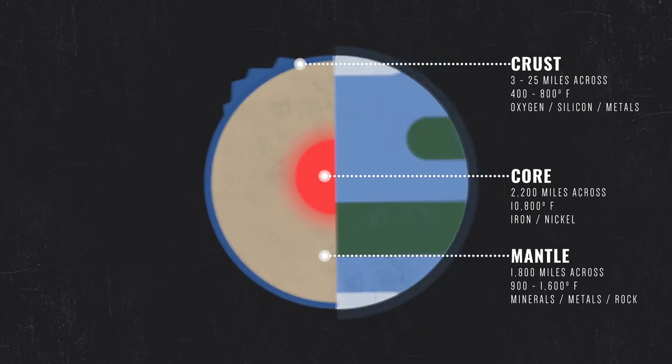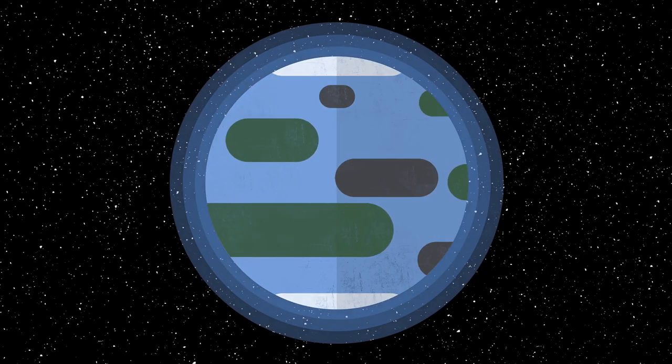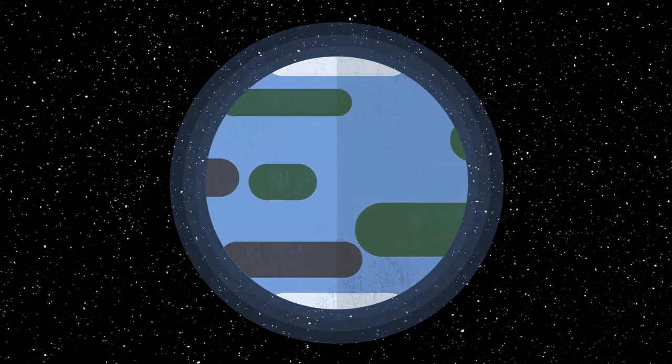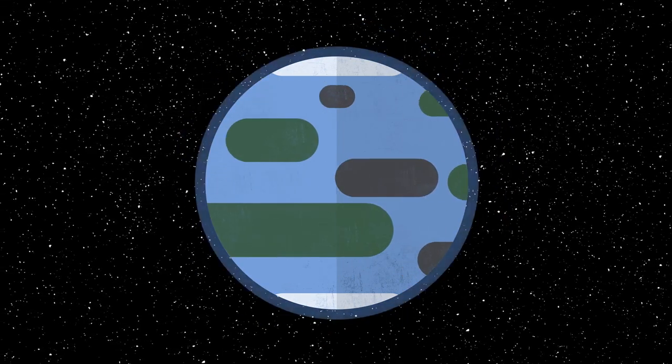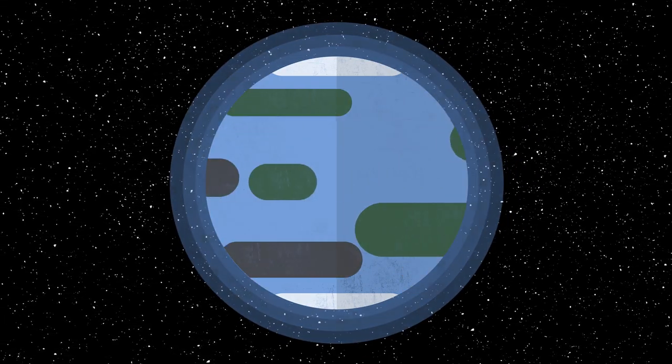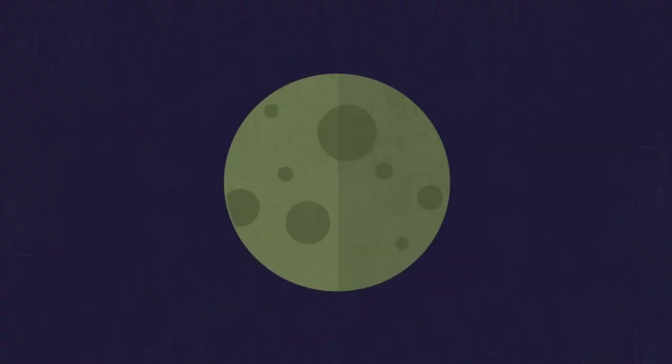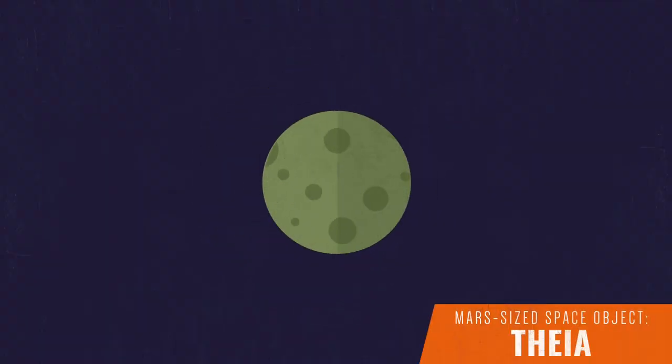We call this process plate tectonics. But things were not always so peaceful on planet Earth. Around 4.5 billion years ago, shortly after the solar system formed, a Mars-sized object named Thea collided with Earth.